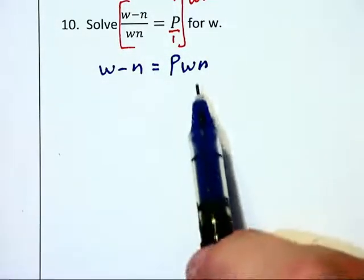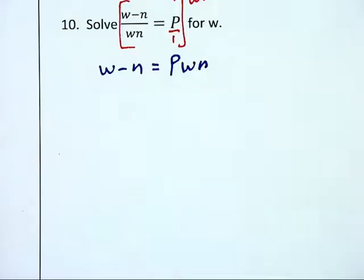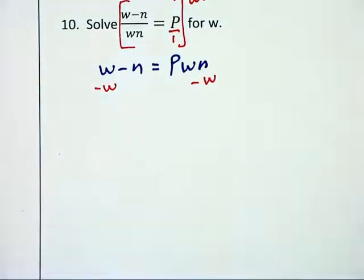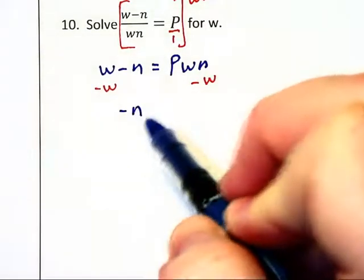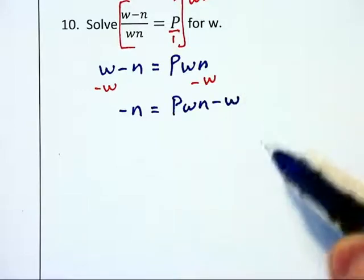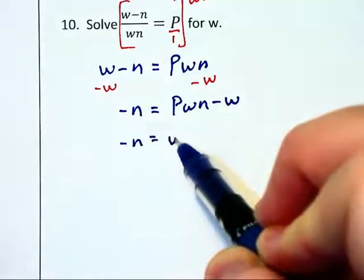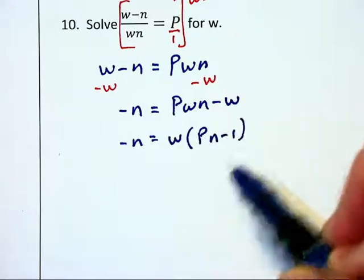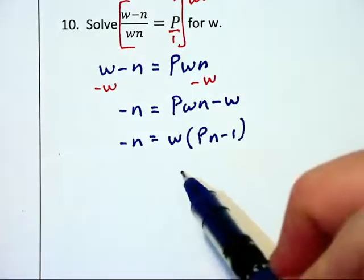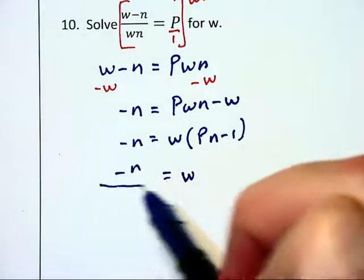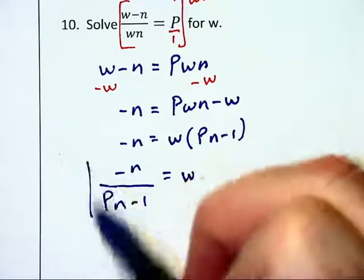And we're trying to solve for w and since we've got two different w's, I want to get them all to one side. So I'm going to subtract the w that's on the right over to the right and that will give me negative n is equal to P wn minus w. Now I can factor a w out on the right and have P n minus 1 which I can then divide off of each side and we can have w equals negative n over P n minus 1.